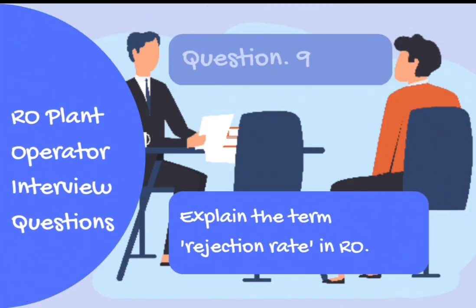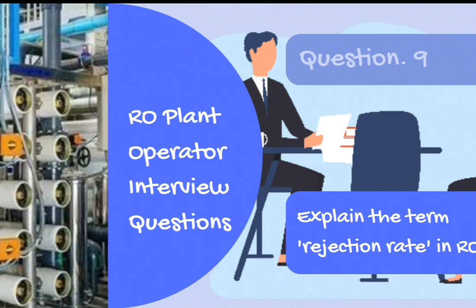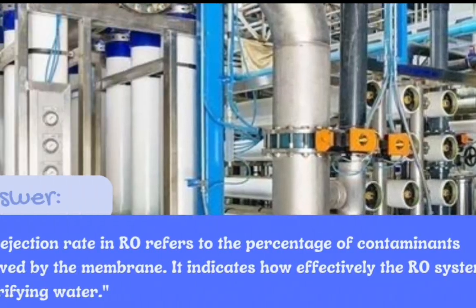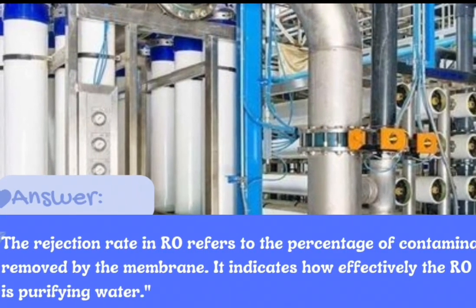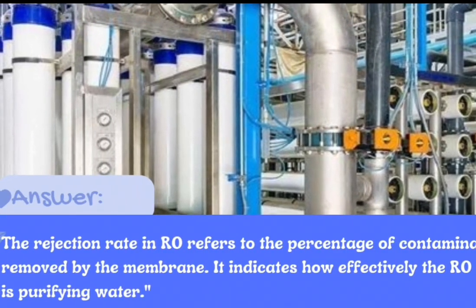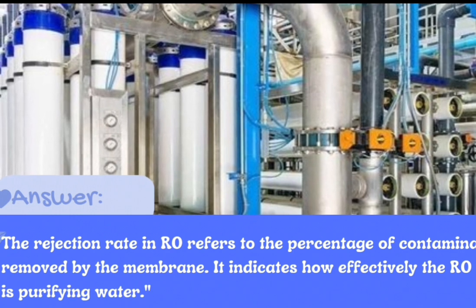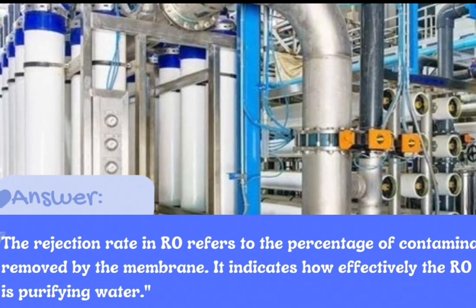Question number 9: Explain the term rejection rate in RO. Answer: The rejection rate in RO refers to the percentage of contaminants removed by the membrane. It indicates how effectively the RO system is purifying water.